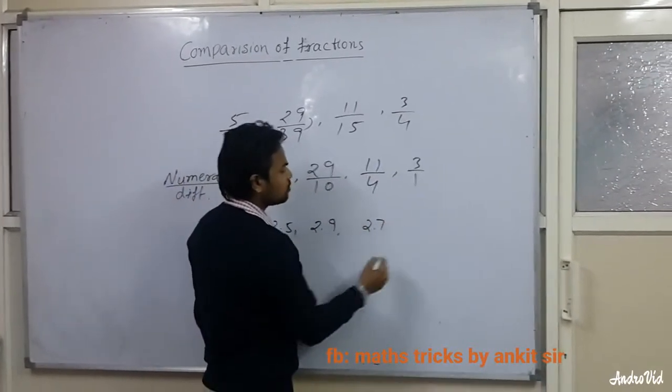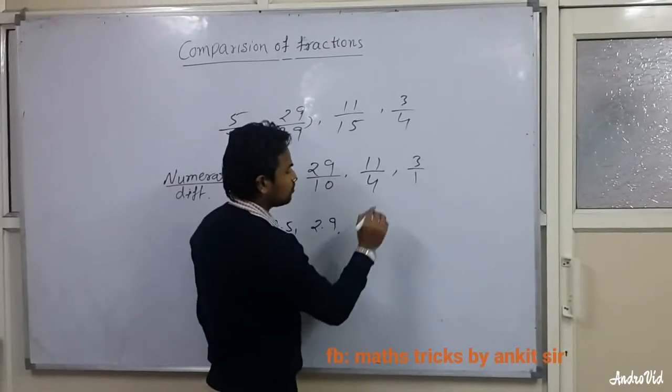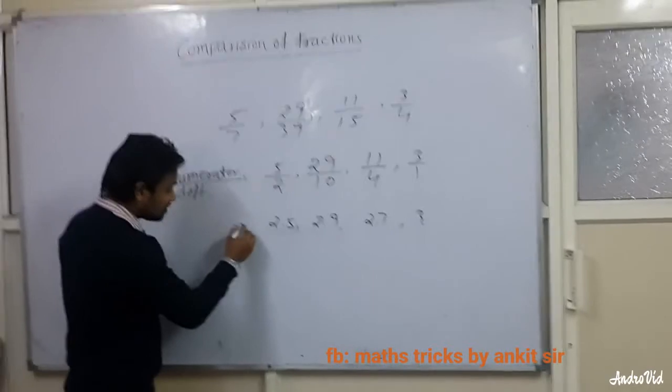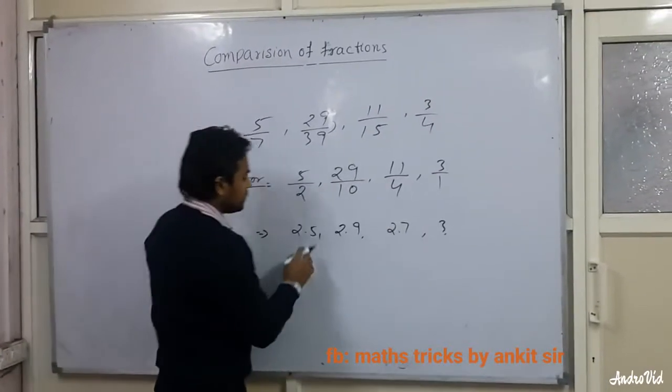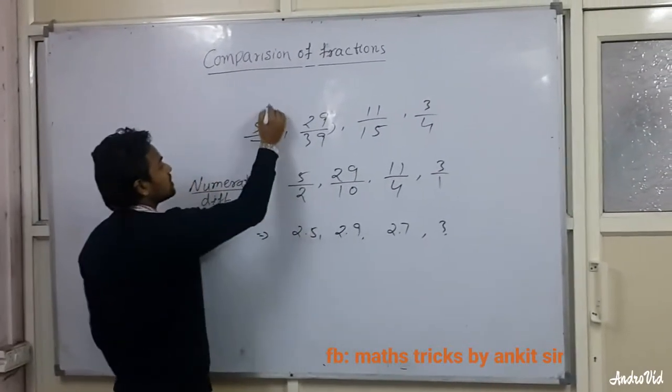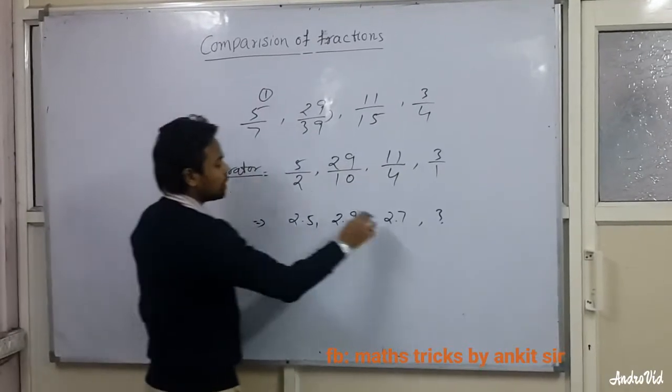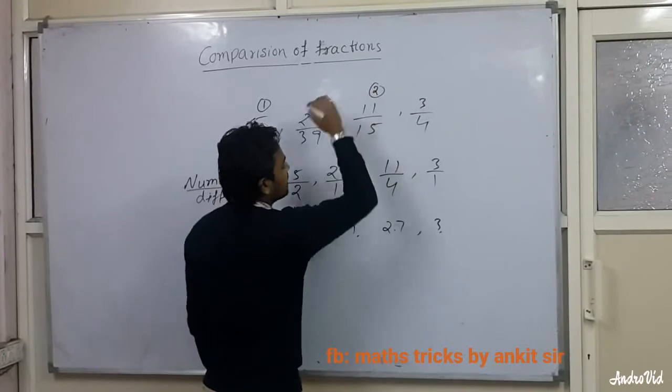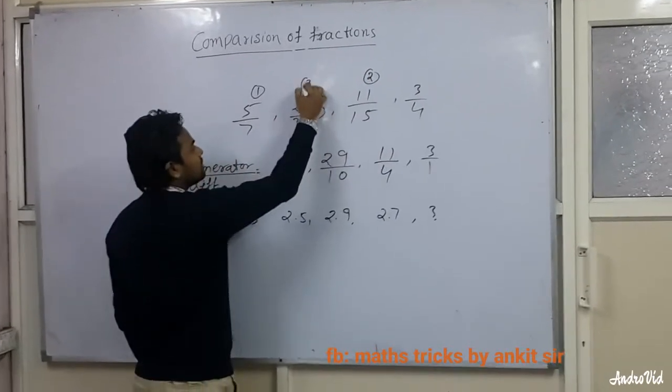So the least value is 2.5, so this is the smallest fraction. 2.7 is the second number, so this is the second fraction. 2.9 is the third fraction, and the largest value is 3, so the largest fraction is this.